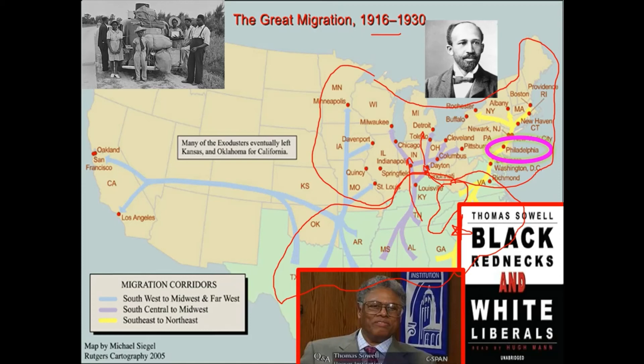Those southern whites didn't believe in education, and if you insulted them, they wanted to fight. They lacked a culture of dignity and instead had a culture of honor — you can read about this in Jonathan Haidt and Malcolm Gladwell. There are many books supporting this theory. The reason we don't discuss it openly is that any conversation involving race gets labeled as racist, but there are 300 years of books and research pointing to a specific southern culture — not a Black culture, not a white culture — that originated in Ireland and Scotland.